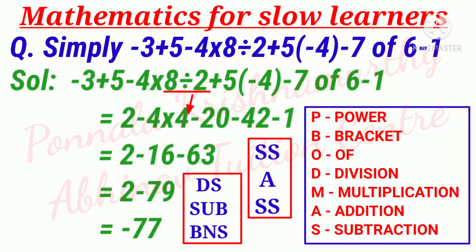First we have to give preference to division, so 8 ÷ 2 is 4, plus, into, 5 × 4 = 20, minus 7 of 6 is -7 × 6, that is -42, minus 1.